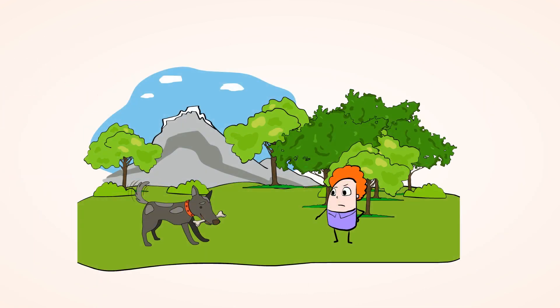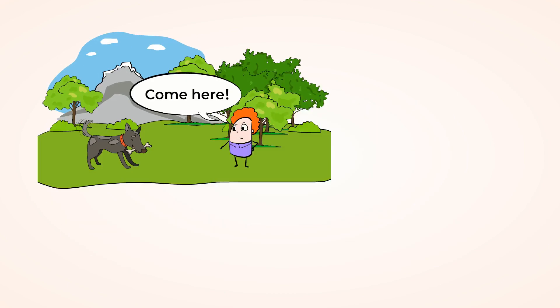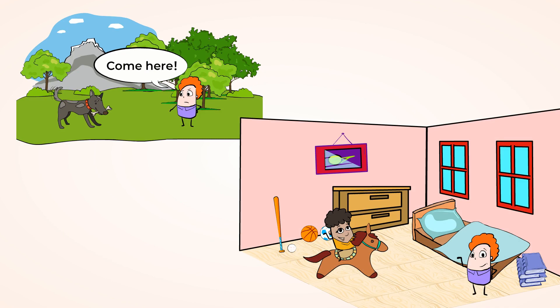So if you're calling your dog in the park, you might say come here in a loud voice. We would write that with an exclamation point. If you're talking to your friend who's in the same room as you, you could just say come here in a normal voice. And we could write that with a period.